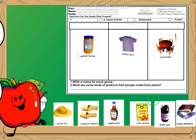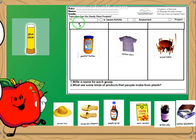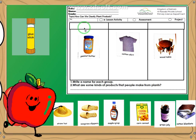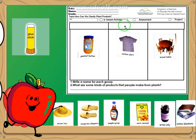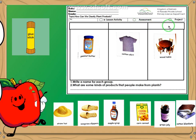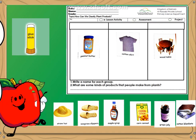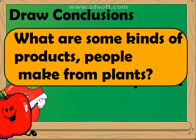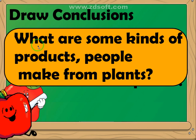After you've finished placing all nine pictures, you're going to write a name for each group. Where do you use these things or products? What are these products for? So, you have to write the name on top. Looking at your work, I want you to make a conclusion. Your conclusion will also be the answer to number two.